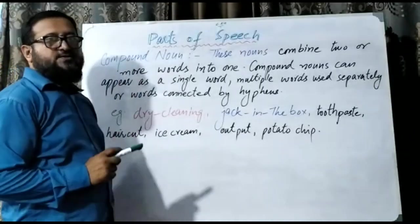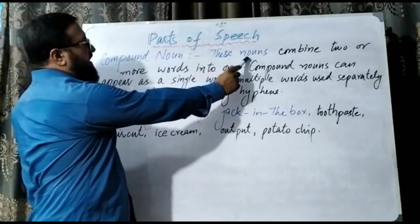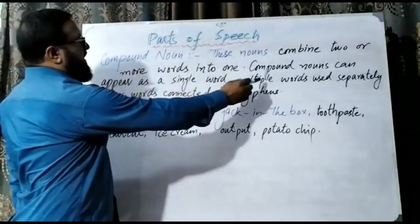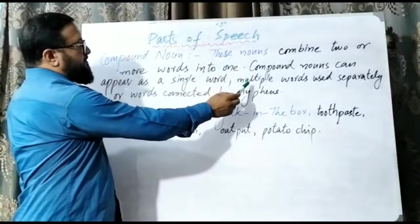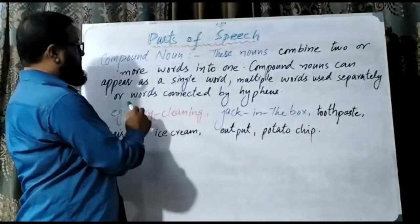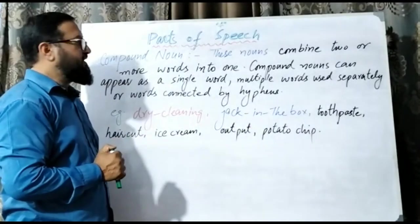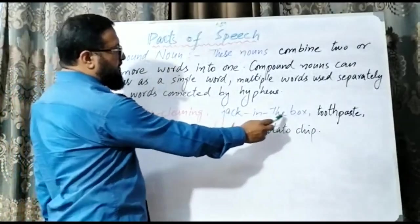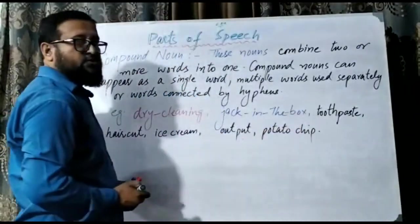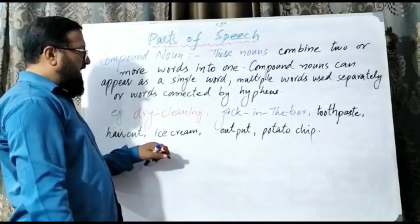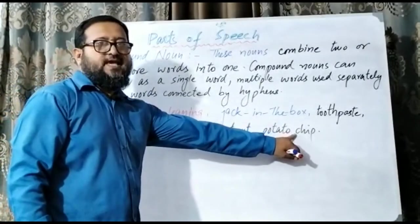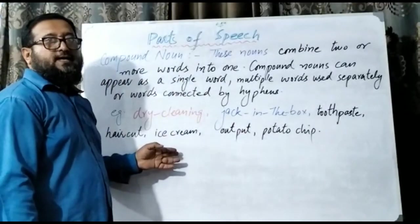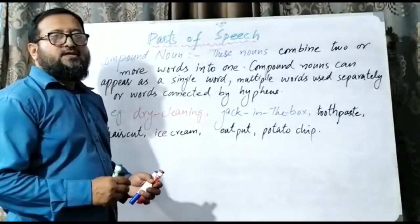This is the last type of noun in parts of speech — the compound noun. Compound nouns combine two or more words into one to form a noun. Compound nouns can appear as a single word, as multiple words, or as words connected by hyphens. Examples include: dry cleaning, Jack-in-the-box, toothpaste, haircut, ice cream, potato chips. These are compound nouns — joining two different words together in noun form.